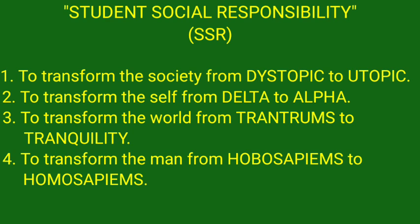Point number one is to transform the society from dystopia to utopia. Social order is in disarray. Societies don't actually function properly. Violence, insurrections, protests, rebels, terrorism — all kinds of ills contemporary society has been experiencing. Students are expected to transform all that, to change all that for the better, and to create a better society.